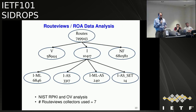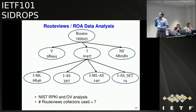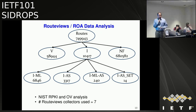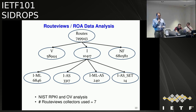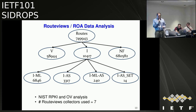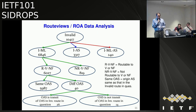We looked at the implications of this policy using real route views and ROA data. From seven route-views collectors, looking at roughly 750,000 routes — of which close to 60,000 are valid, 10,000 are invalid, and the rest are not-found. We can differentiate the invalids based on: max-length mismatch, AS mismatch, both max-length and AS mismatch, and AS set. Looking at the 10,000 invalids: max-length invalid are about 7,000, AS invalid about 3,000, and both max-length and AS invalid, a small number.